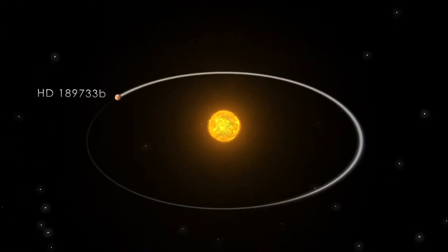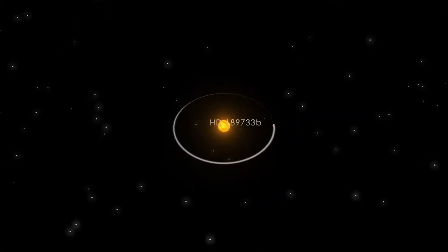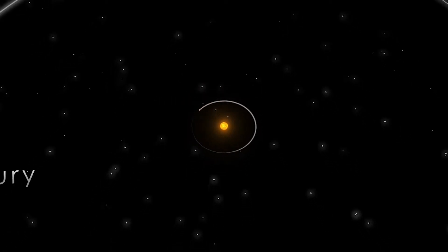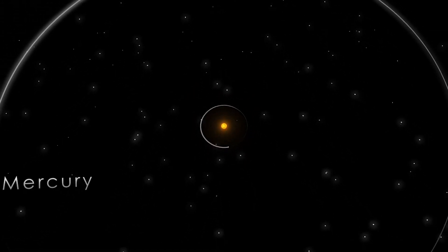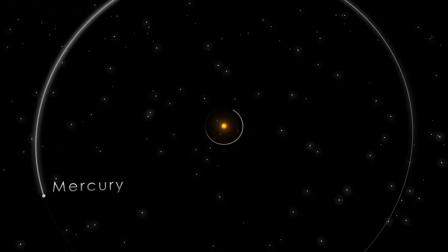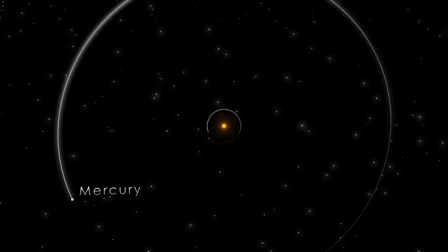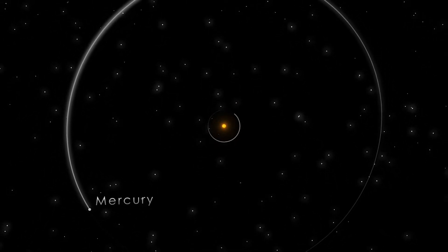Incredibly, the planet orbits just 3 million miles from the star, 12 times closer than Mercury orbits our sun. It's so close that the planet whips around its star in a little over two days. But this planet pays a steep price for skirting its sun.